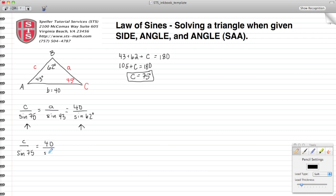And these all in degrees. When I have a proportion that means I can cross multiply, so I'm left with C sine of 62 degrees is equal to 40 times the sine of 75 degrees.